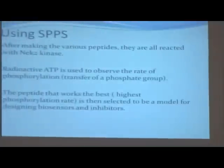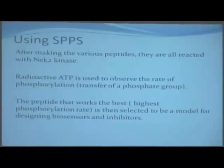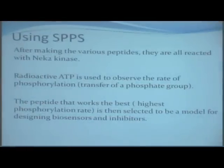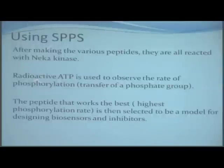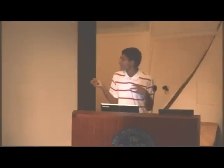After we make the various peptides — I haven't gotten up to this stage yet because I'm still in the process of making them — we use radioactive ATP. This type of ATP has a special marker, and when you run the assay, we can tell that it's been transferred. When we find the peptide with the highest phosphorylation rate, that's the one selected to create an inhibitor for. By creating an inhibitor, we can stop the enzyme from overacting in cells that have cancer.